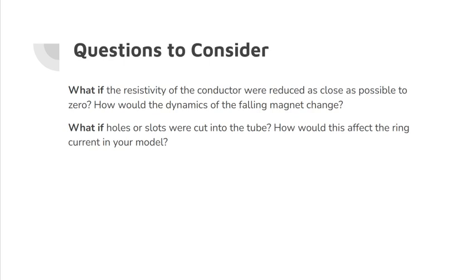What if holes or slots were cut in the tube? How would this affect the ring current of your model? If there were holes cut into the tube, it would disrupt the normal flow of current through the rings along the tube. The braking forces would be decreased in strength as a result of the decrease in current flowing through the tube.